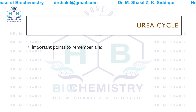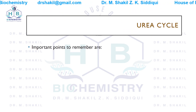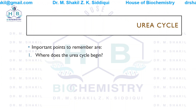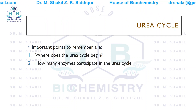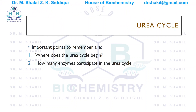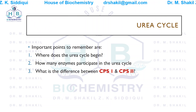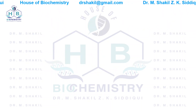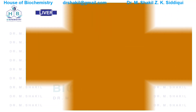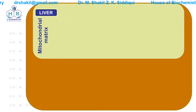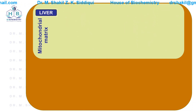Before starting the urea cycle, there are some important points to remember: Where does the urea cycle begin? How many enzymes participate? What is the difference between CPS1 and CPS2? The urea cycle starts in the liver, specifically in the mitochondrial matrix. Remember — the urea cycle starts in the mitochondrial matrix of the liver.